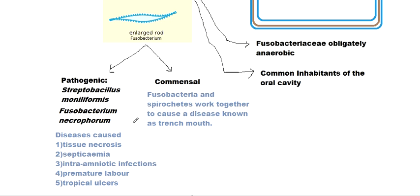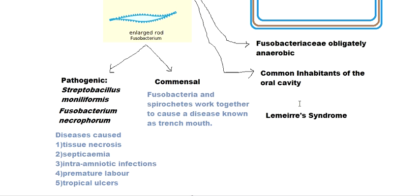Lemierre's syndrome arises because these bacteria are common inhabitants of the oropharynx. When pathogenic in that area, they can affect the nearby tonsils in the pharyngeal region, infect there, keep dividing, and eventually burst open or destroy the dorsal wall of the pharynx, infecting nearby regions including arteries and veins.